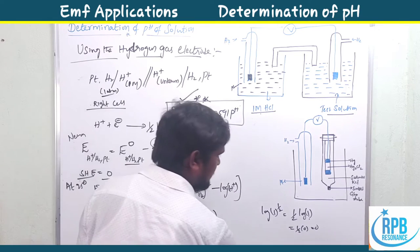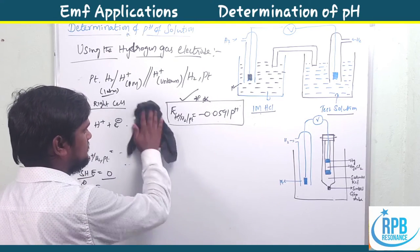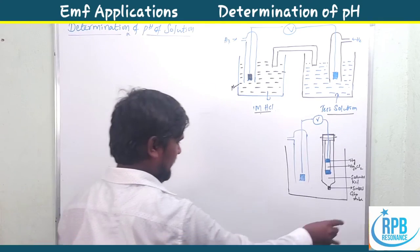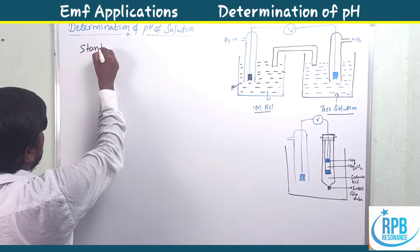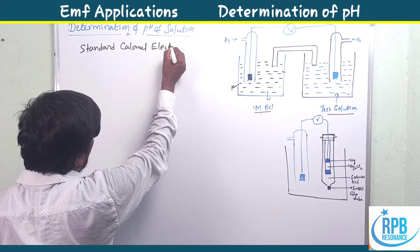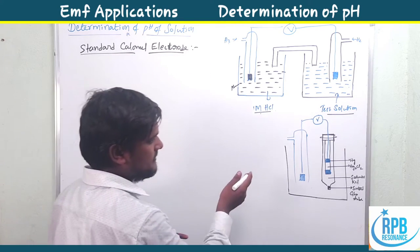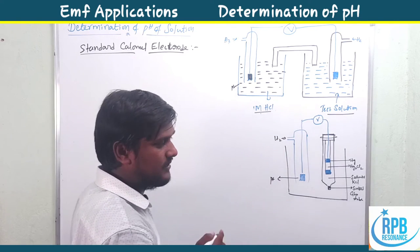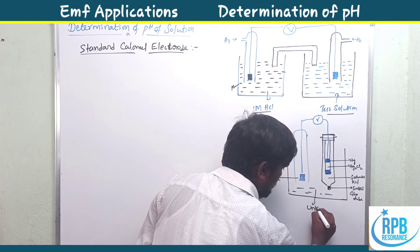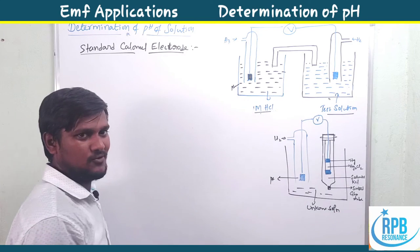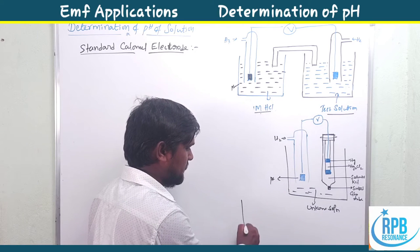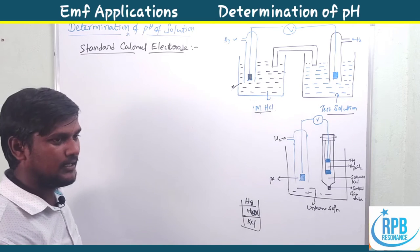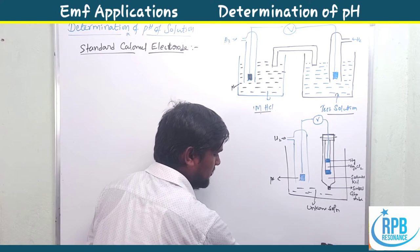Now let us move to the second standard electrode — the calomel electrode. The setup has the calomel electrode on the right side and a hydrogen gas electrode on the left. The left side has a platinum wire with hydrogen gas bubbling through the unknown sample solution. The calomel electrode consists of mercury, then mercuric chloride (Hg2Cl2), and finally saturated KCl solution.